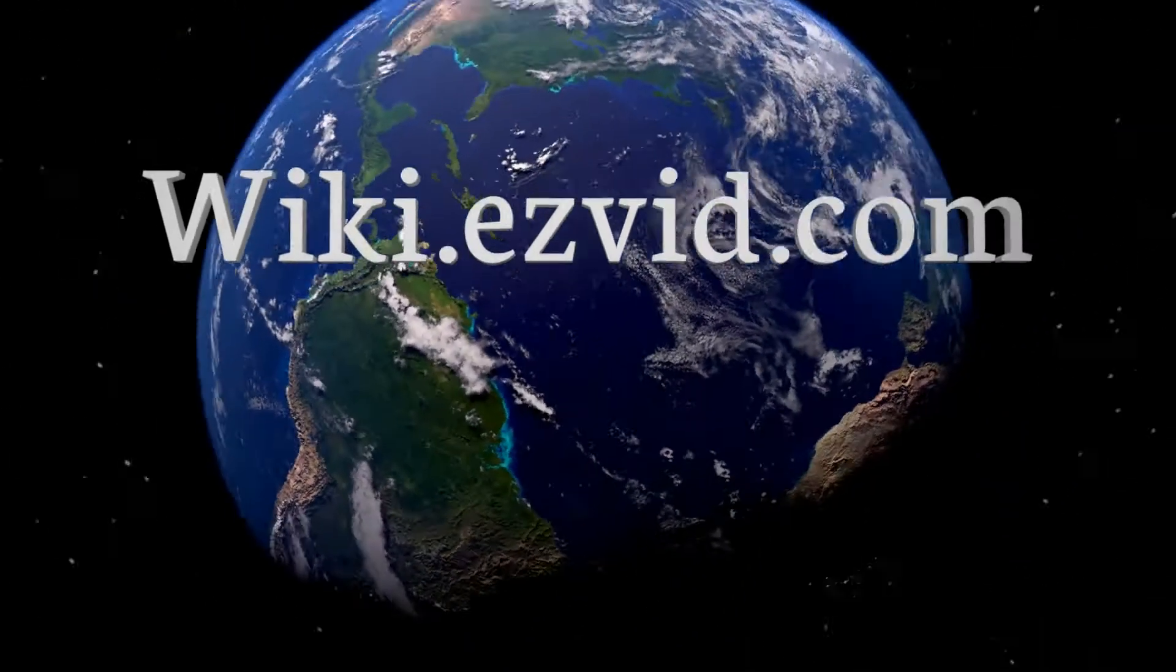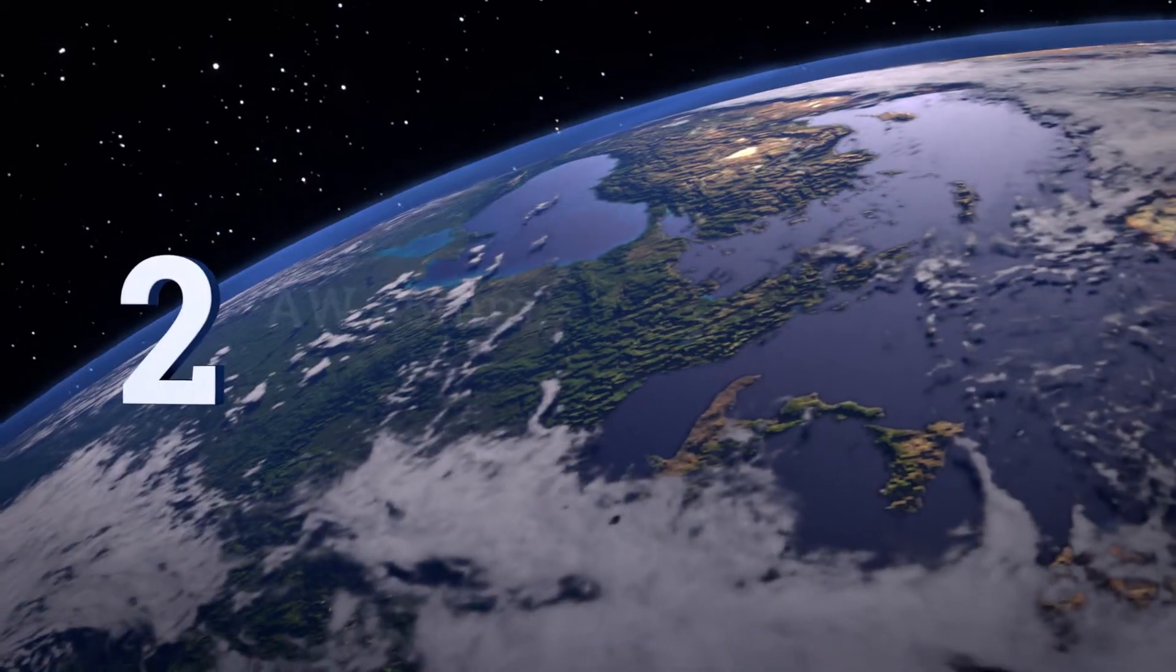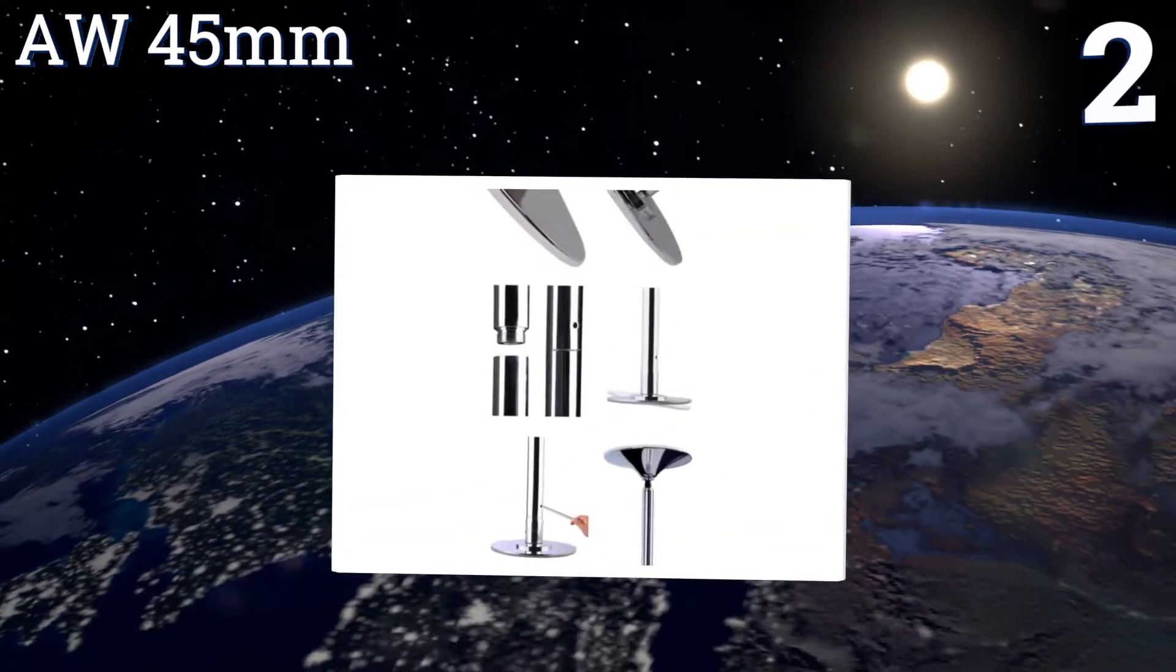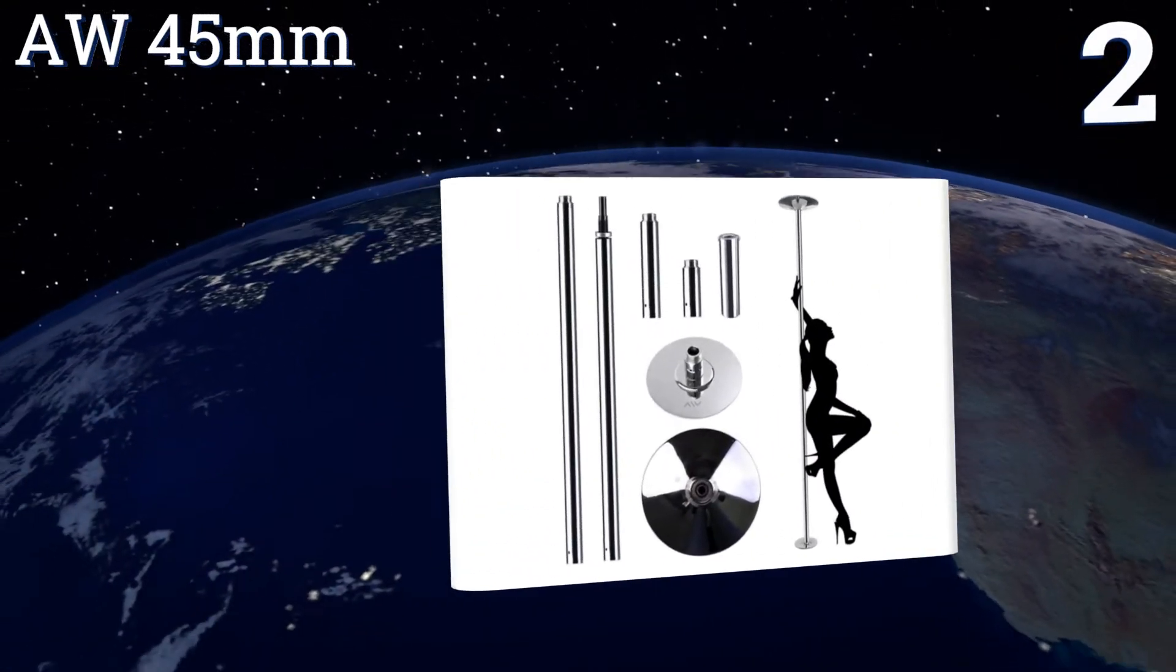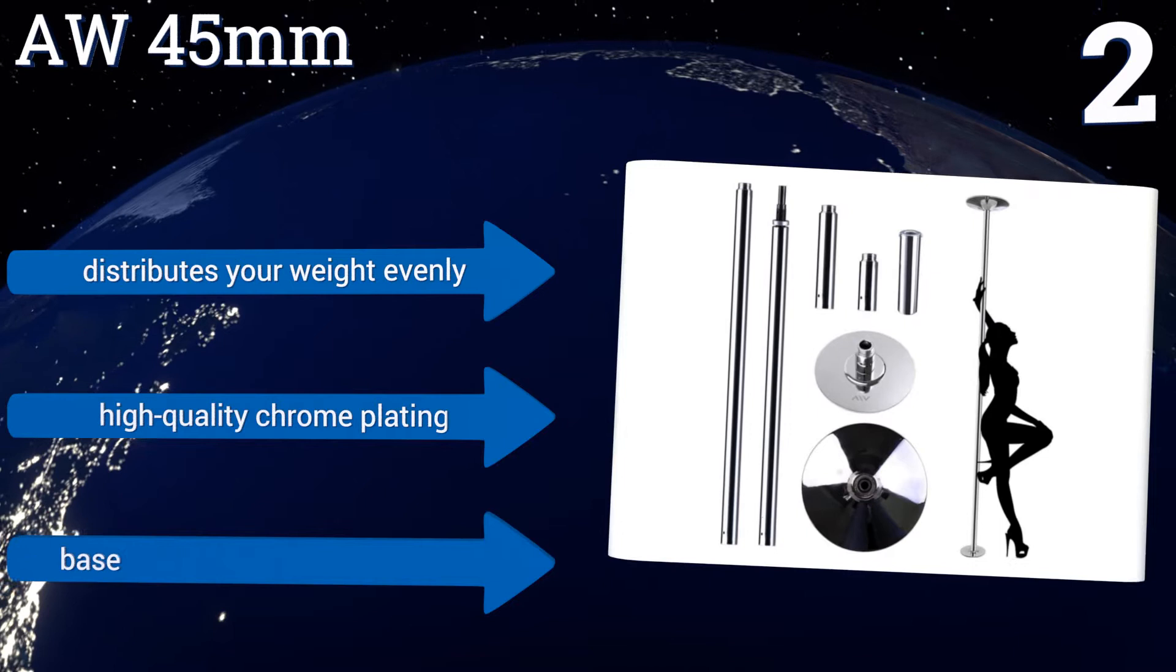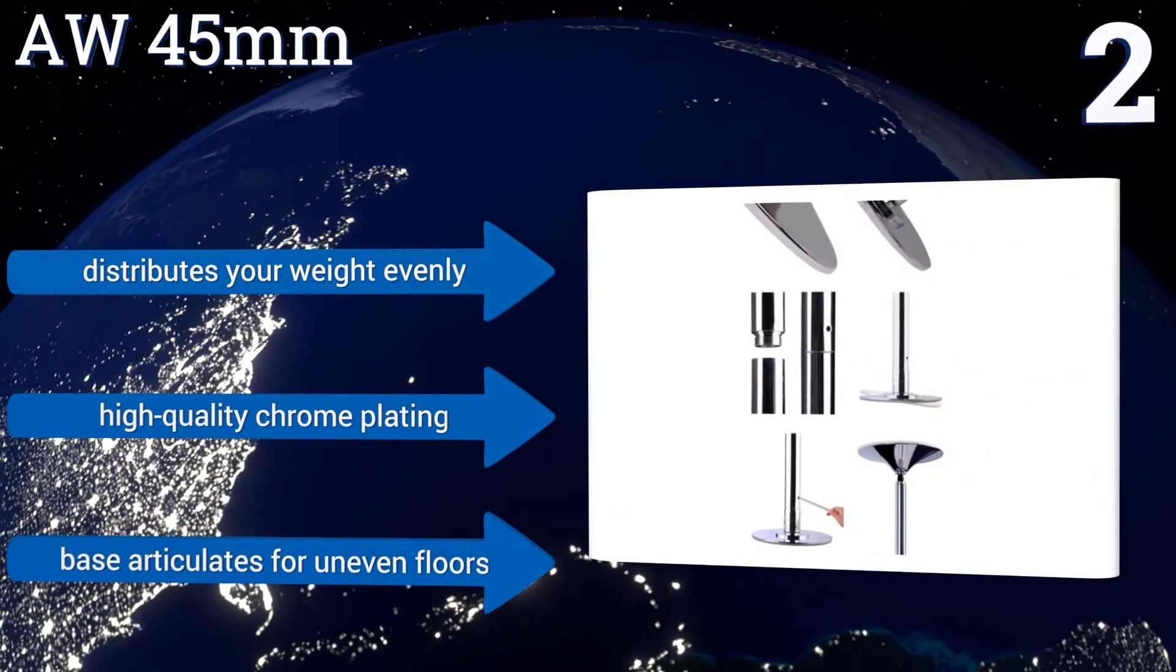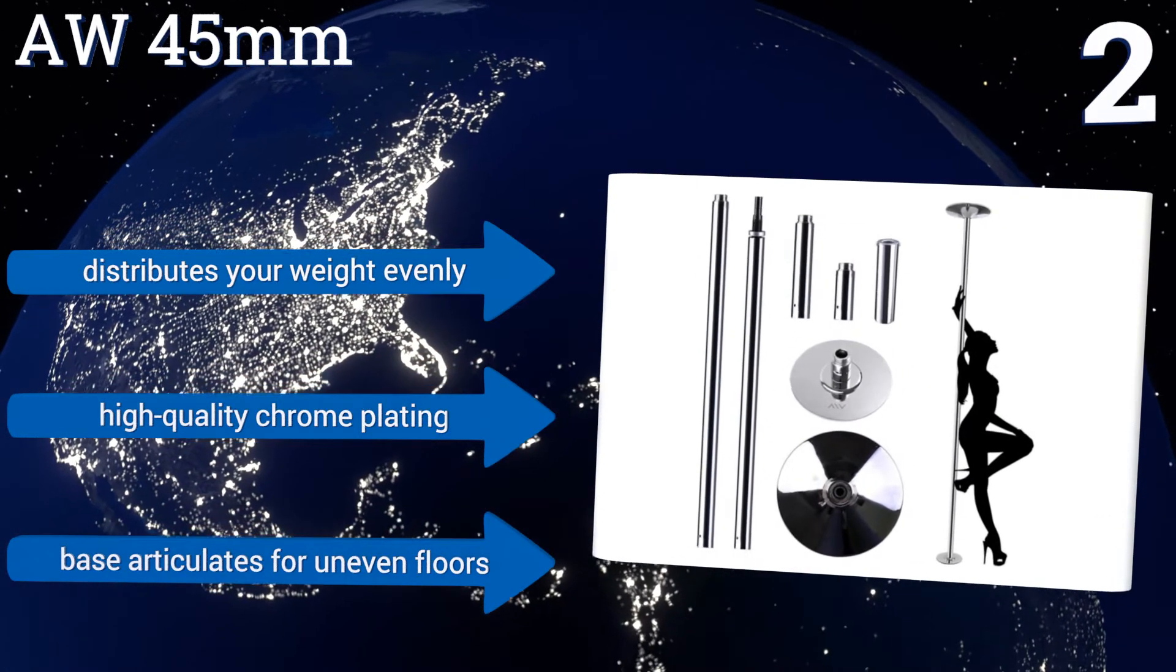At number two, the AW 45 millimeter is a low-cost option that's perfect for beginners learning exotic dance or for the occasional home enjoyment. It screws tightly together at all joints to ensure maximum stability and it can be used on ceilings between seven and a half and nine feet tall. It distributes your weight evenly and comes with high quality chrome plating and a base that articulates for uneven floors.